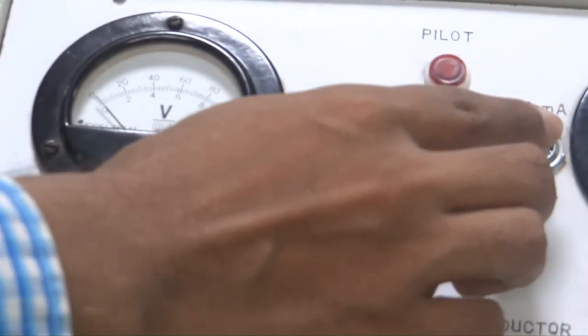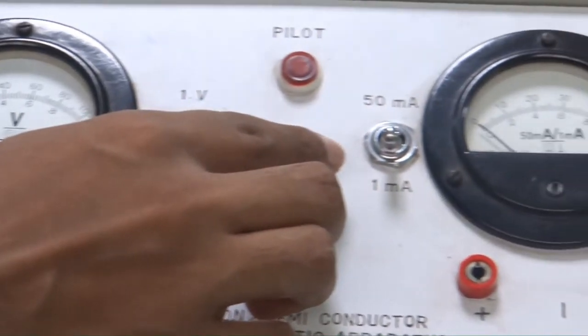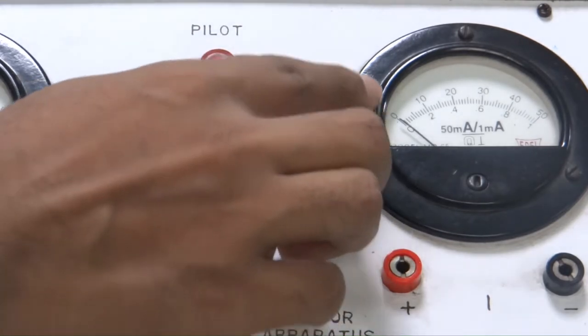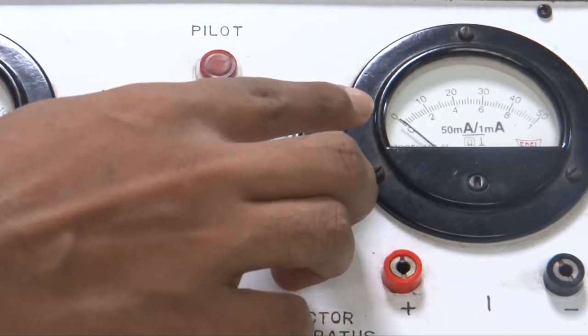Similarly, for the ammeter, there are two ranges, that is 1 milliampere and 50 milliampere. For this, you will take the upper and lower readings respectively.